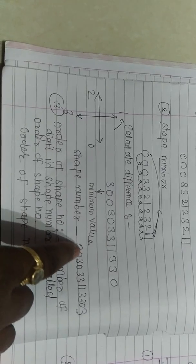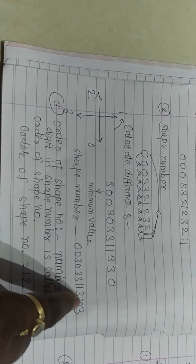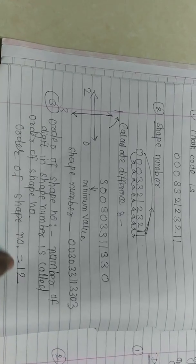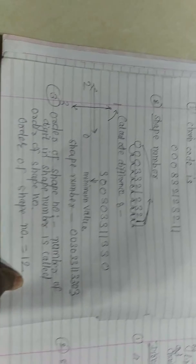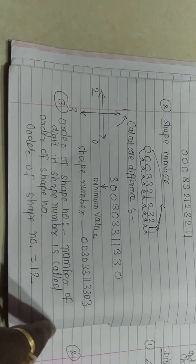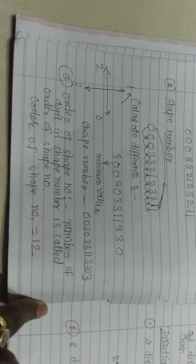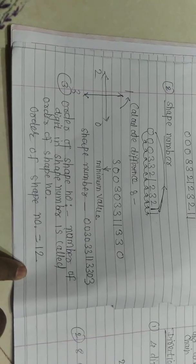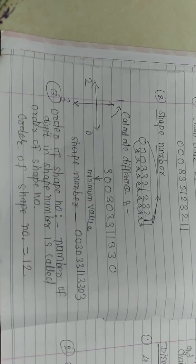We count the digits in the shape number: one, two, three, four, five, six, seven, eight, nine, ten, eleven, twelve. So the order of the shape number is twelve. Thank you for watching. If you like this video, please subscribe and mention it in the comment box.